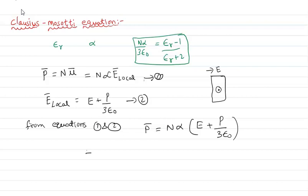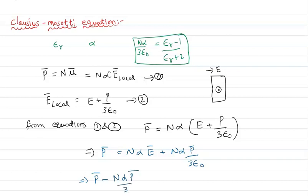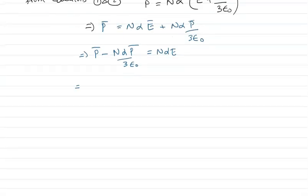Simplifying this expression: P-bar equals N alpha into E plus N alpha into P by 3 epsilon-0. Rearranging, P-bar minus N alpha into P-bar by 3 epsilon-0 equals N alpha into E-bar. Taking P-bar as common: P-bar into the quantity 1 minus N alpha by 3 epsilon-0 equals N alpha E.